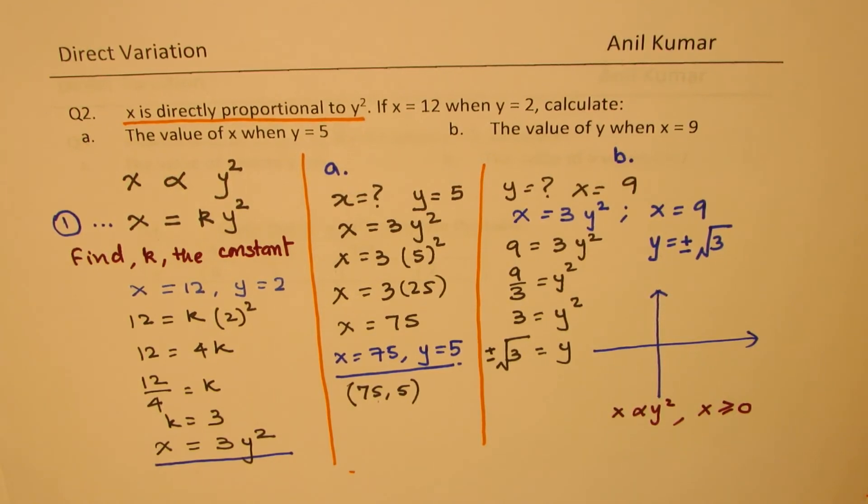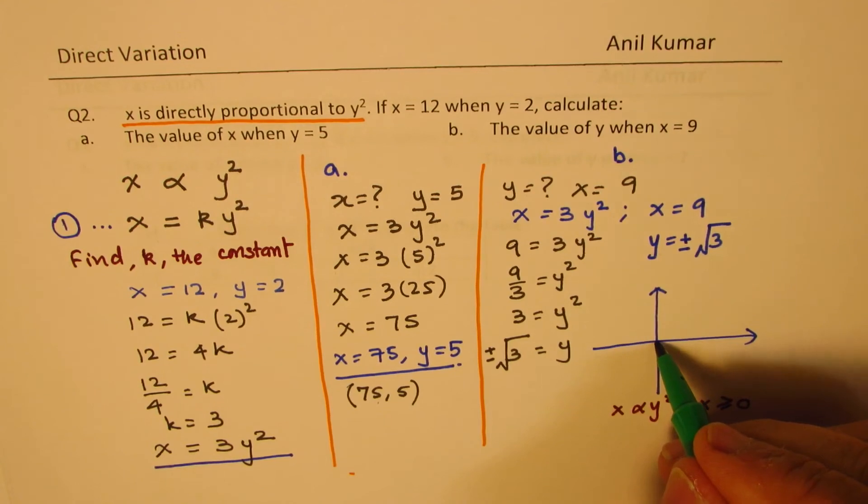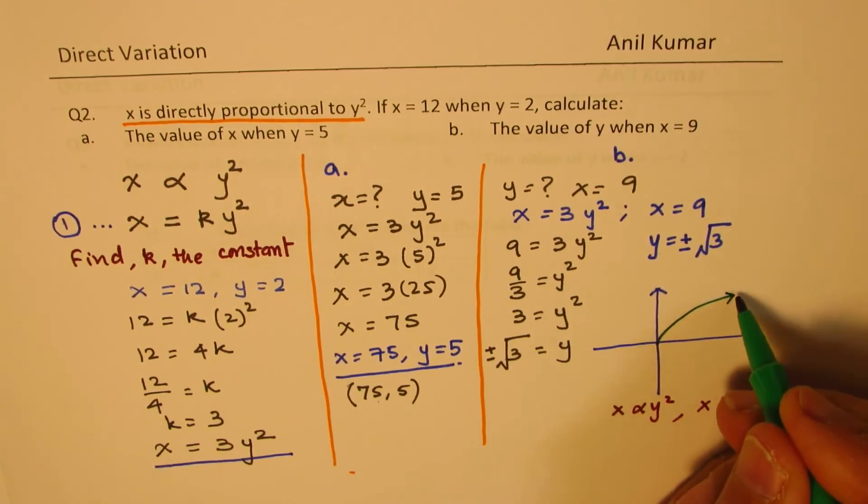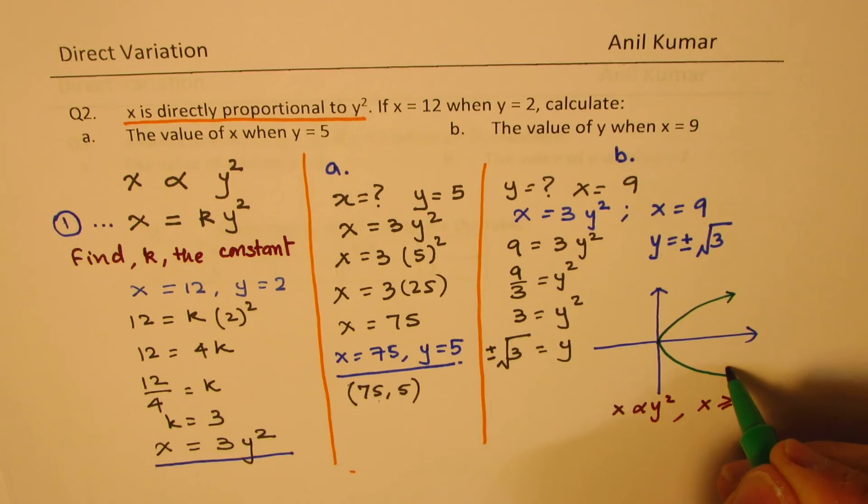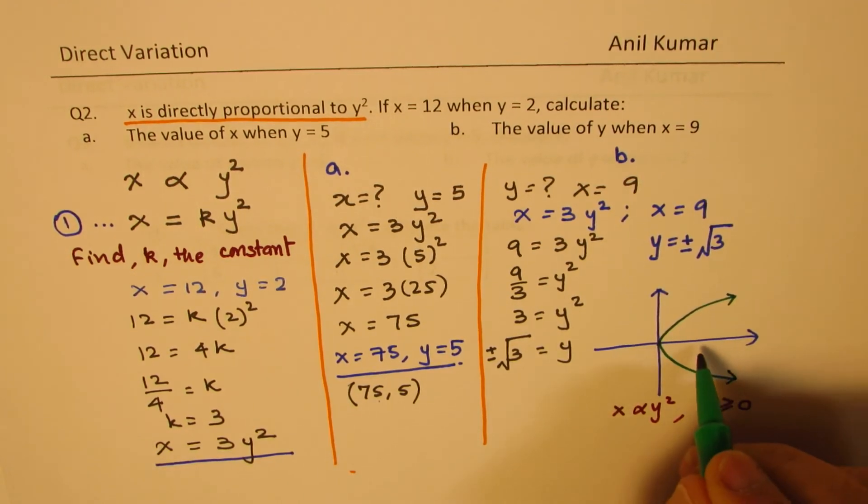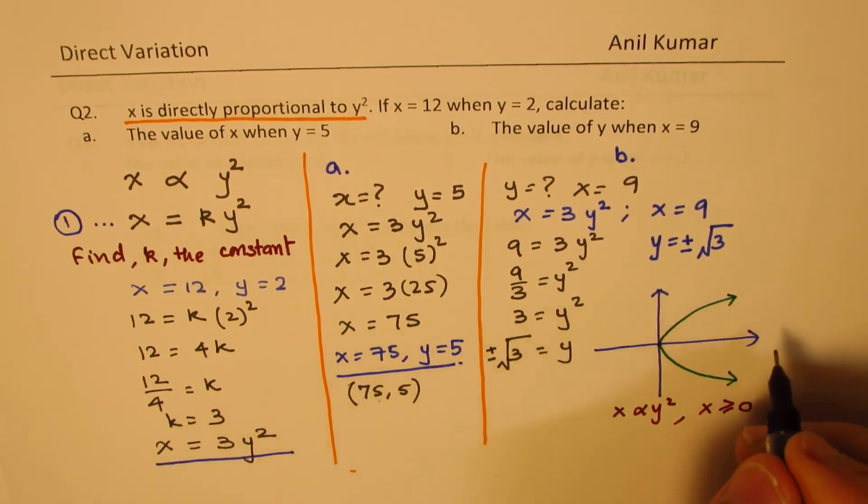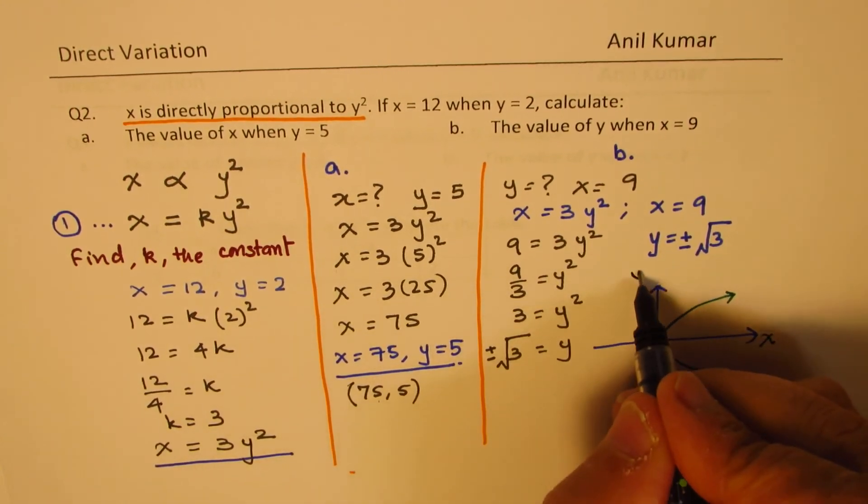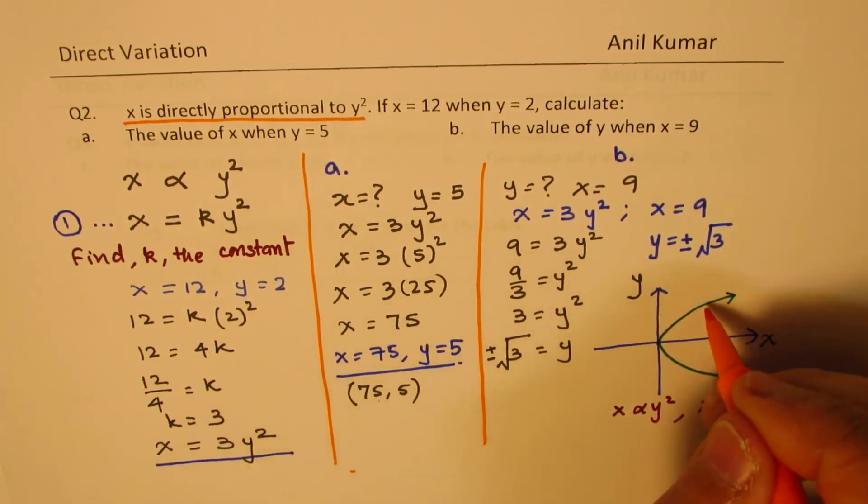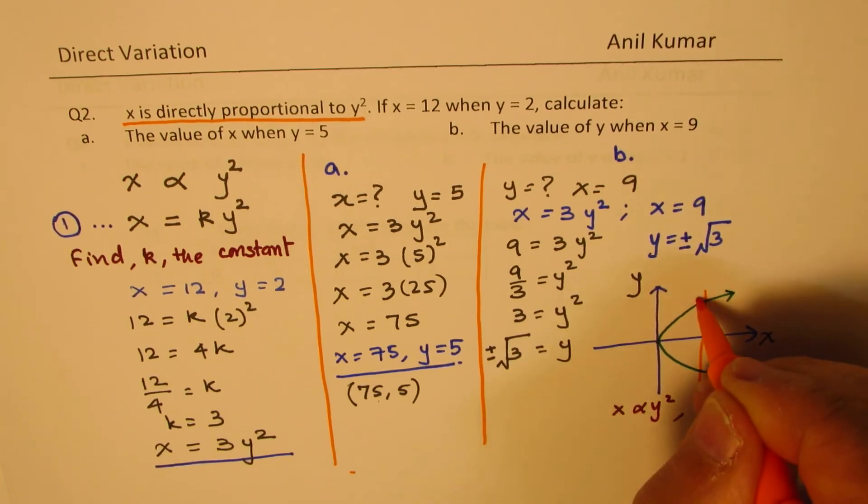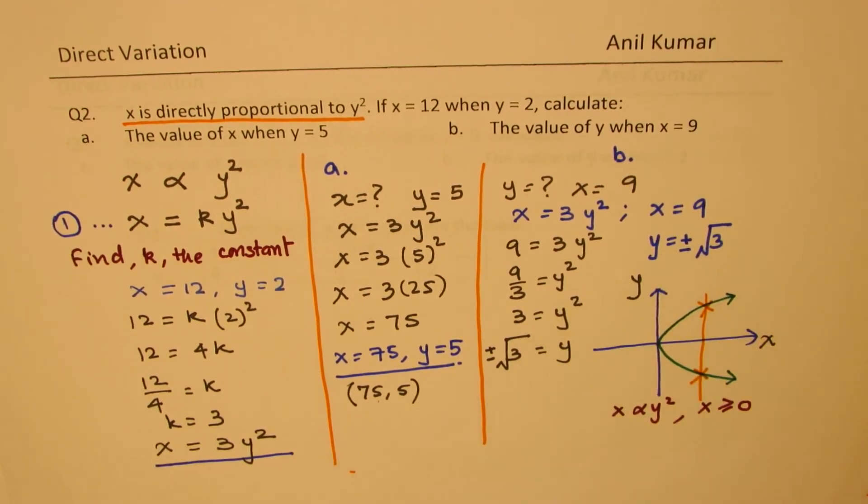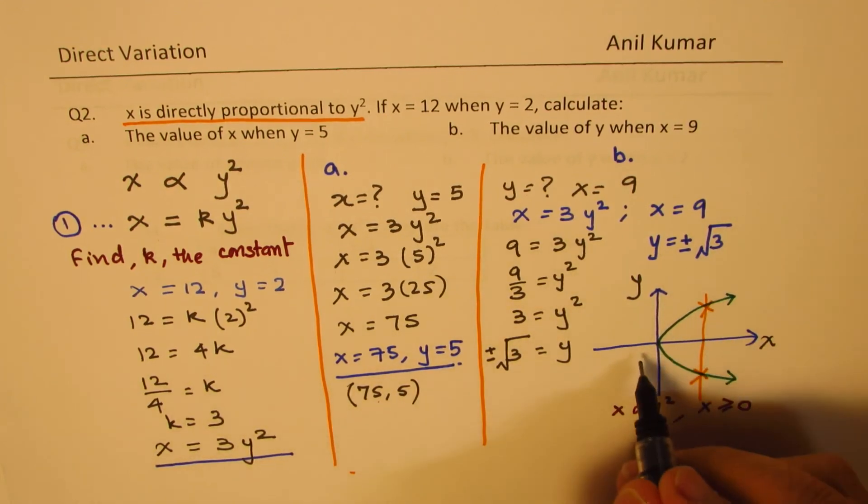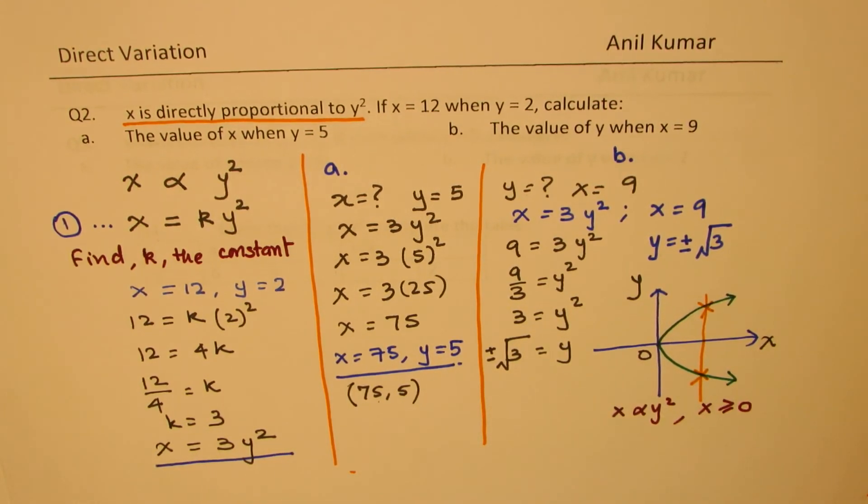So basically here we have a relation which is not a function but a relation which is kind of like this. It's a parabola which opens on the right side and we're looking for two answers to our question. So what we really found here was that for a value these were the two points of our interest. So I hope that clearly explains why the value of y has two values plus and minus square root 3 in this particular example.